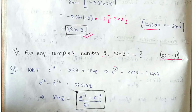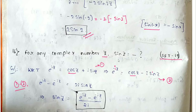Substituting i in place of minus i, we want to find sin(z). We label equation 1 and equation 2. To eliminate cos(z), we subtract equation 2 from equation 1: e^(iz) minus e^(−iz) equals 2i·sin(z). So sin(z) = (e^(iz) minus e^(−iz)) / 2i.